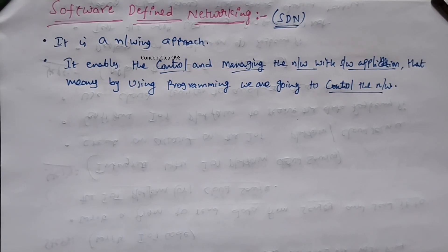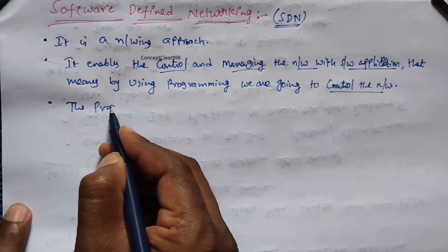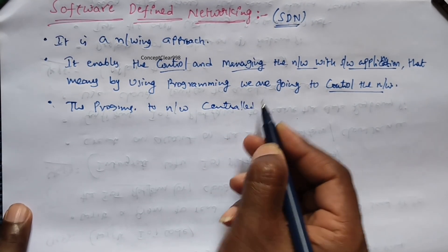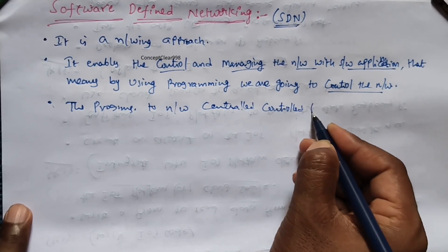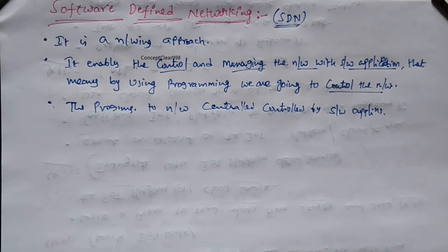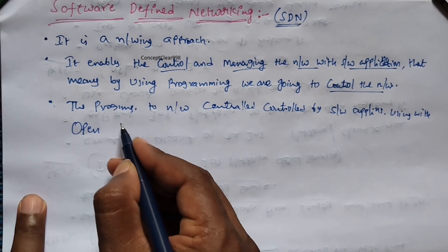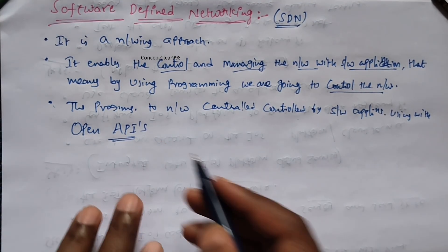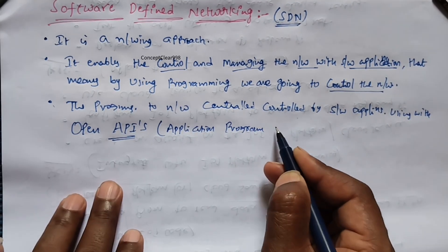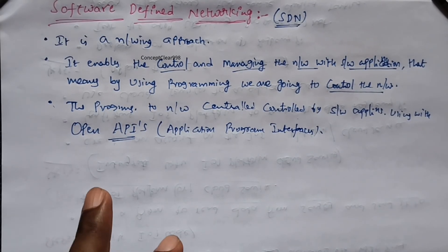The programming of the network is centrally controlled through software applications using open APIs. API stands for Application Program Interface. By using this API the networks will be controlled.